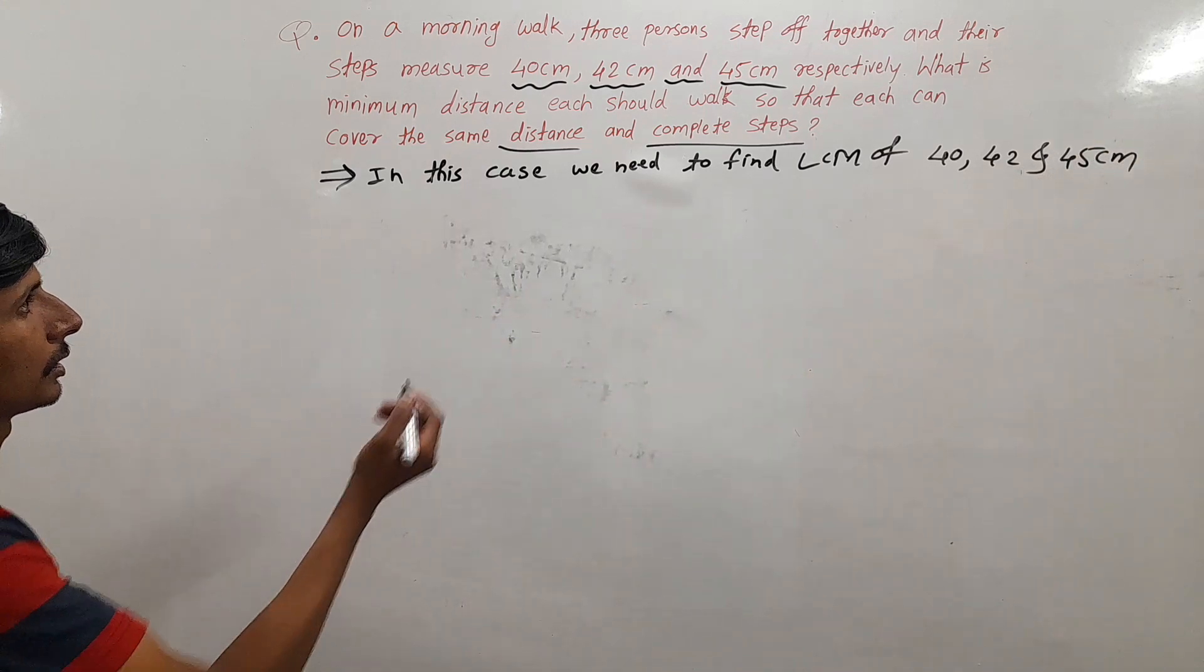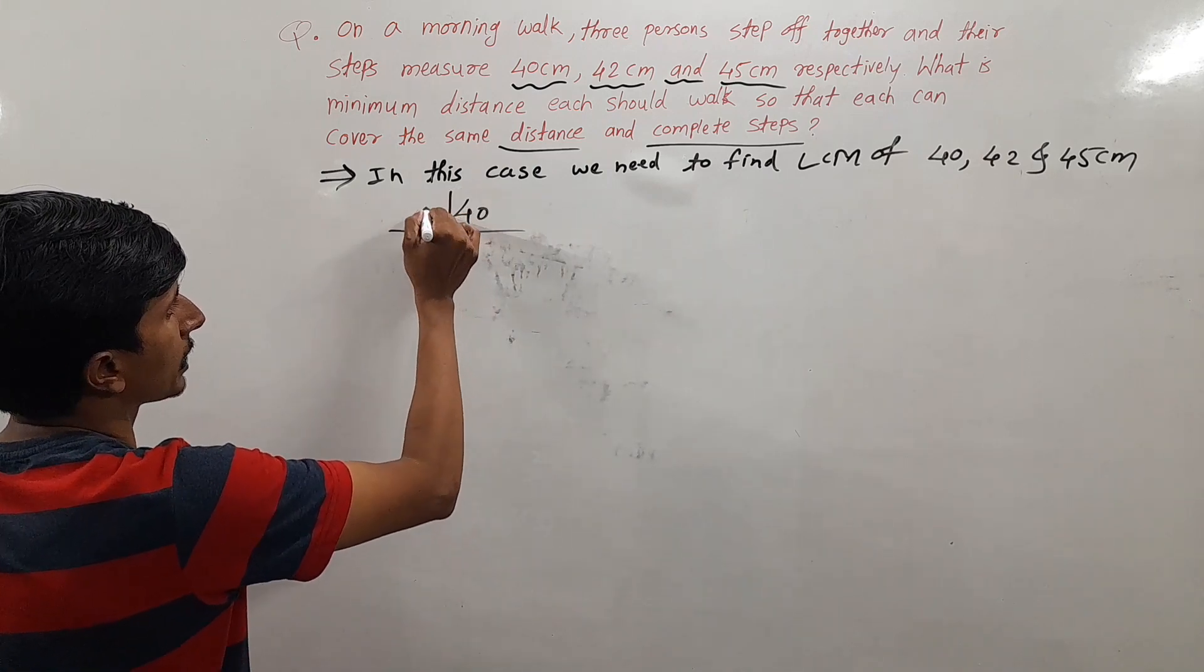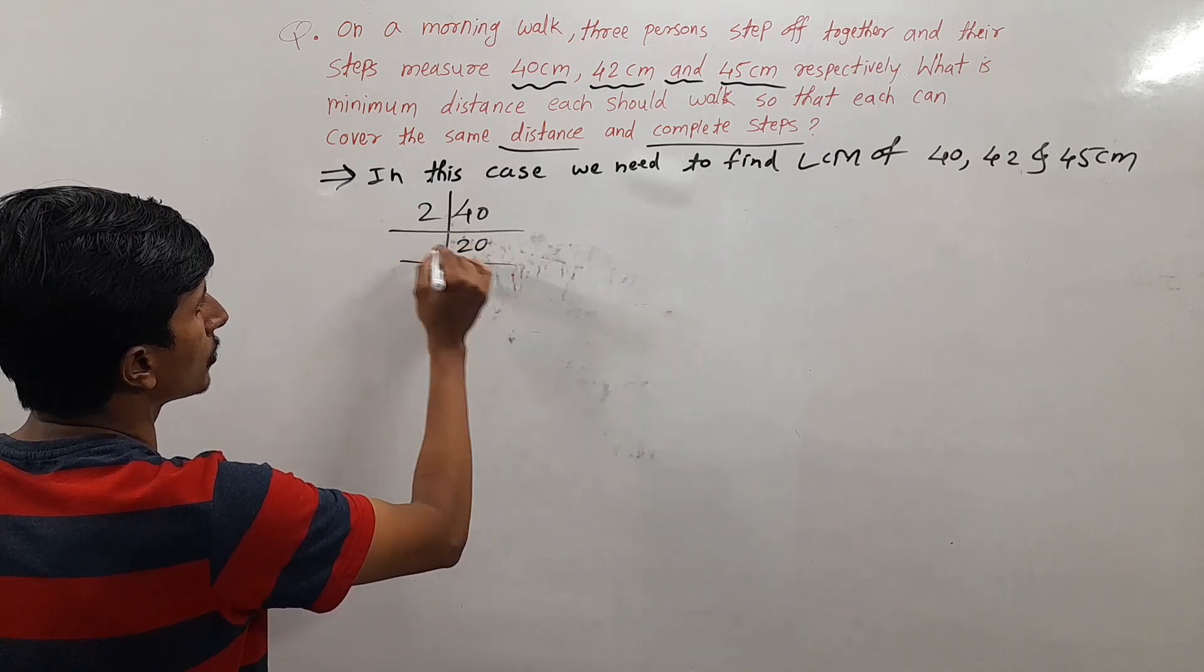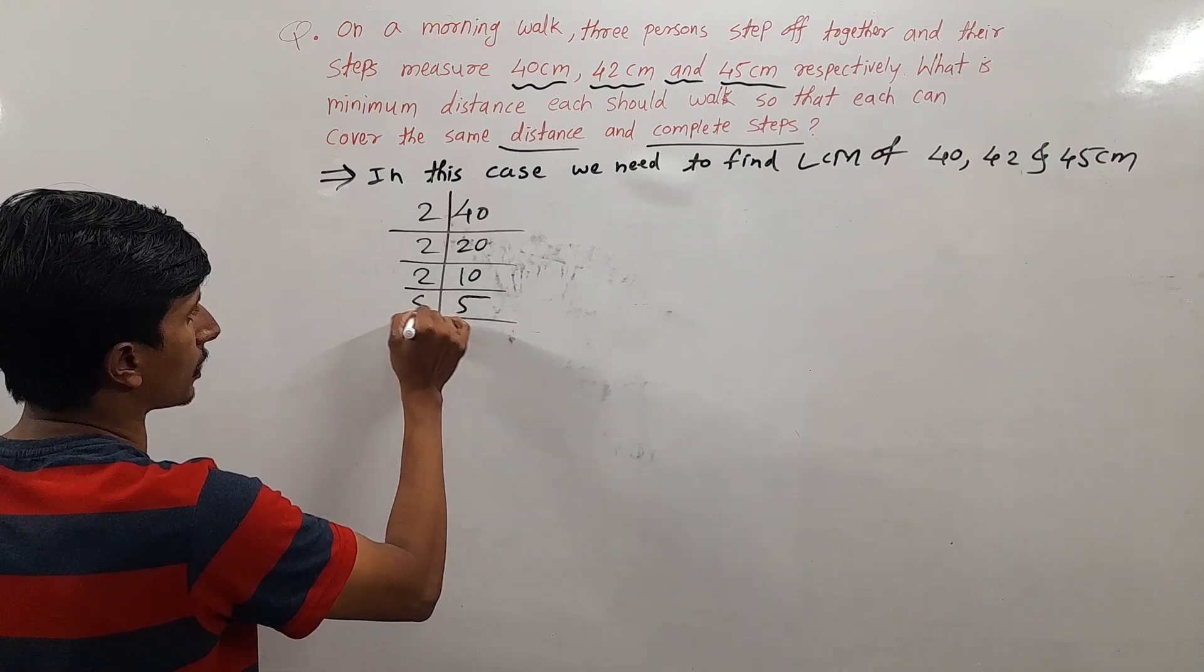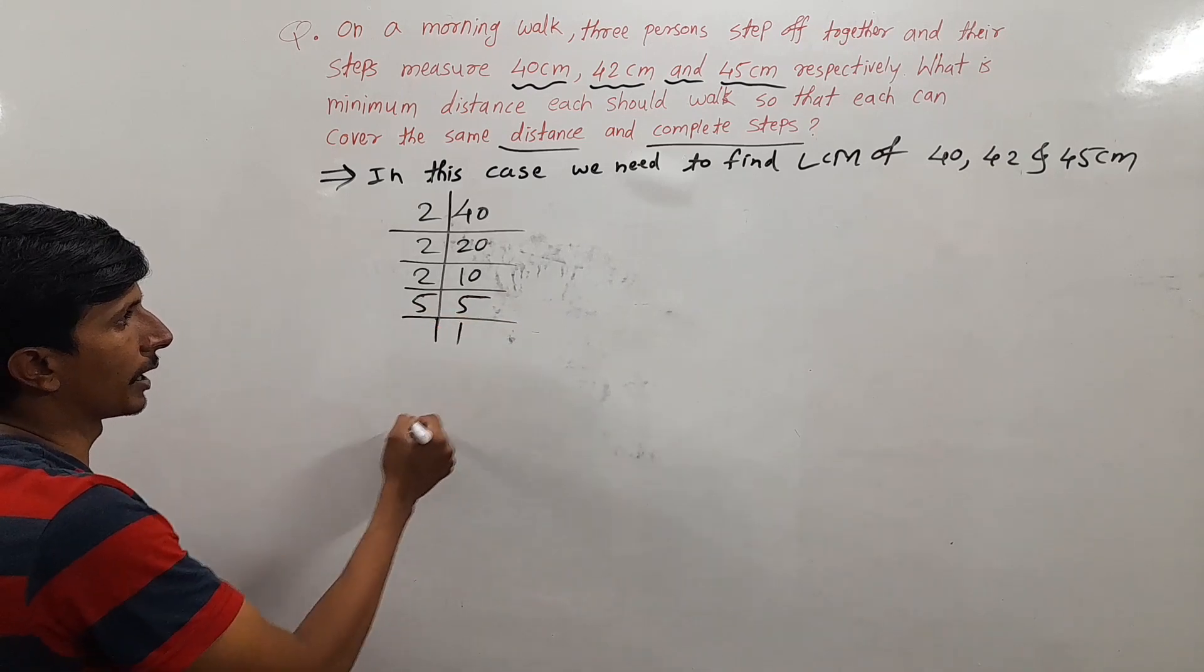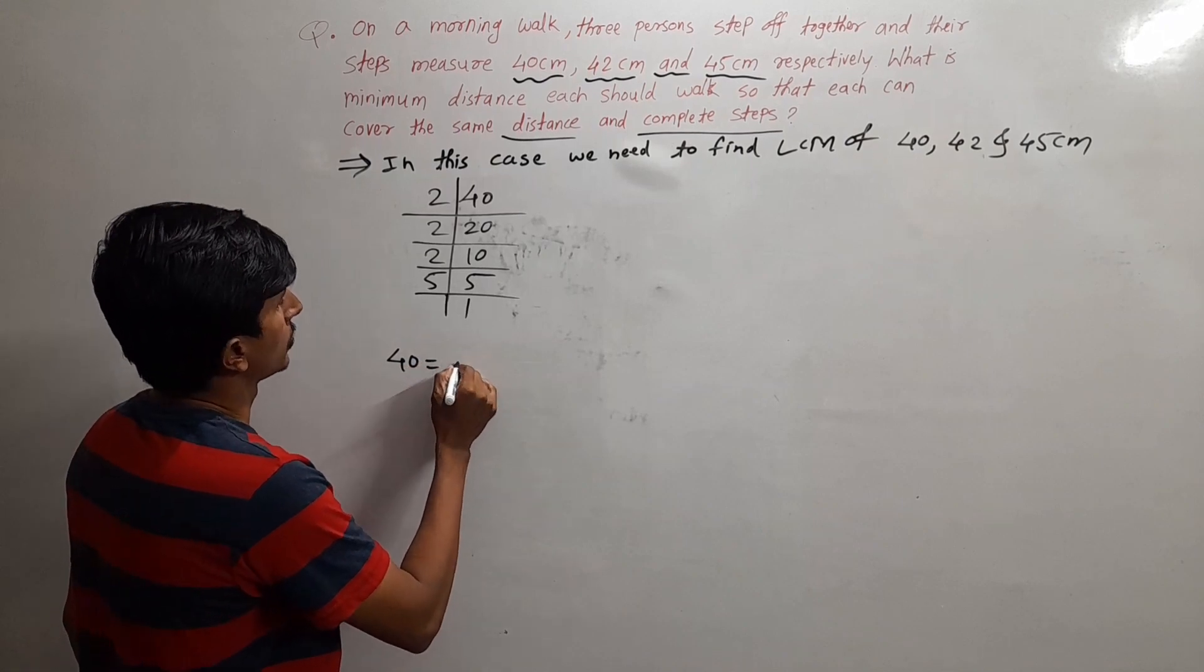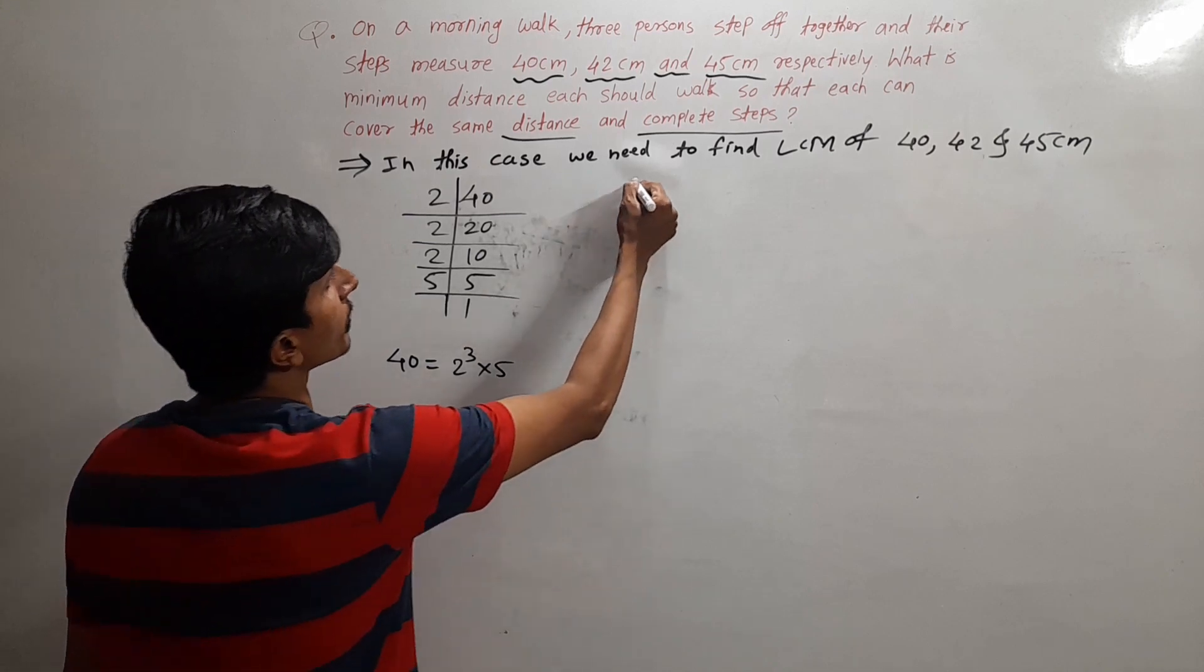First we can find the LCM using prime factorization. For 40: 2 times 20, 2 times 10, 2 times 5. So the prime factorization of 40 is 2³ × 5.